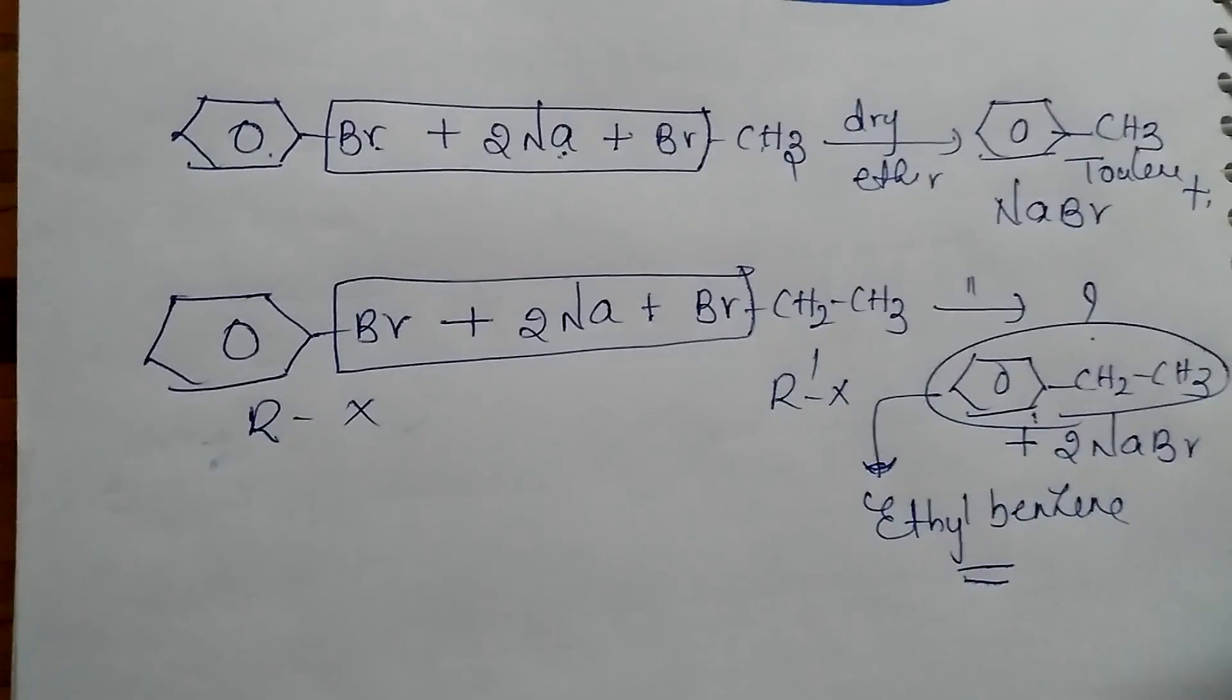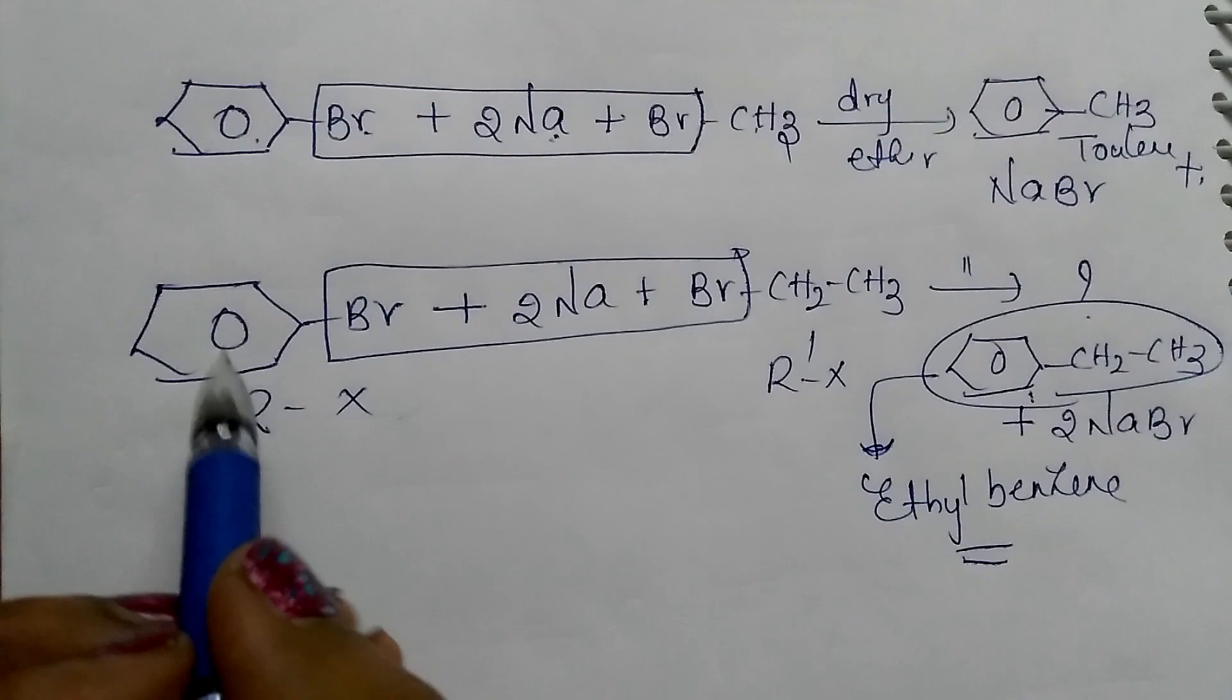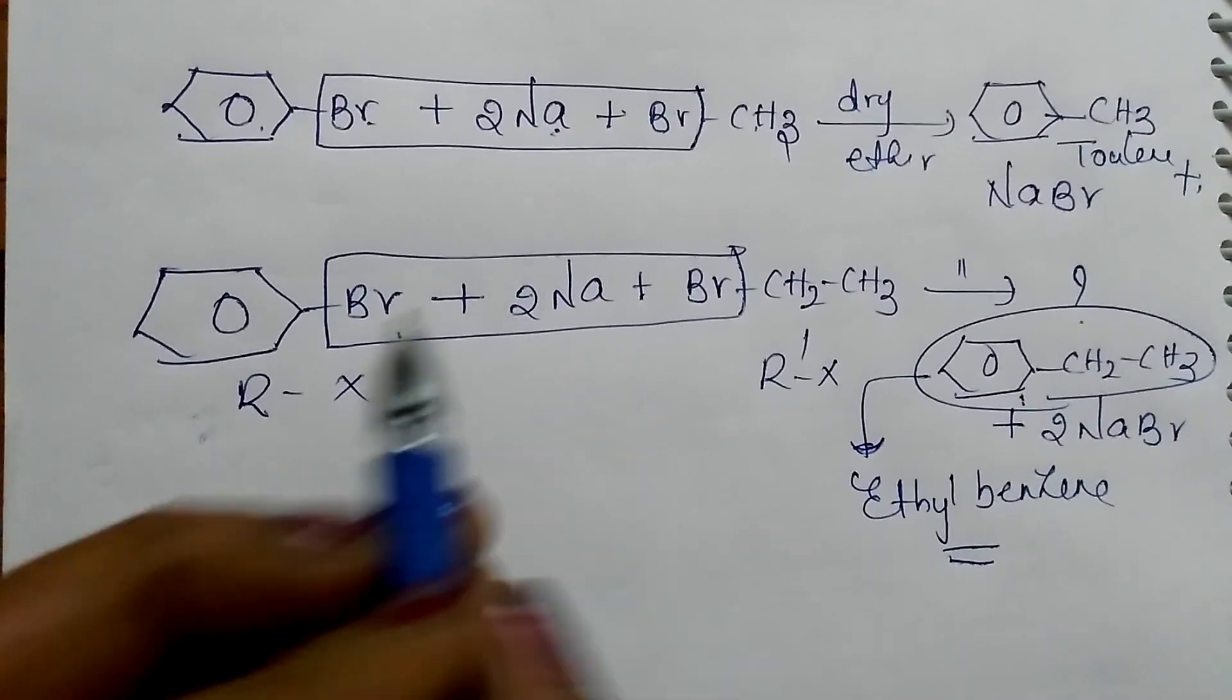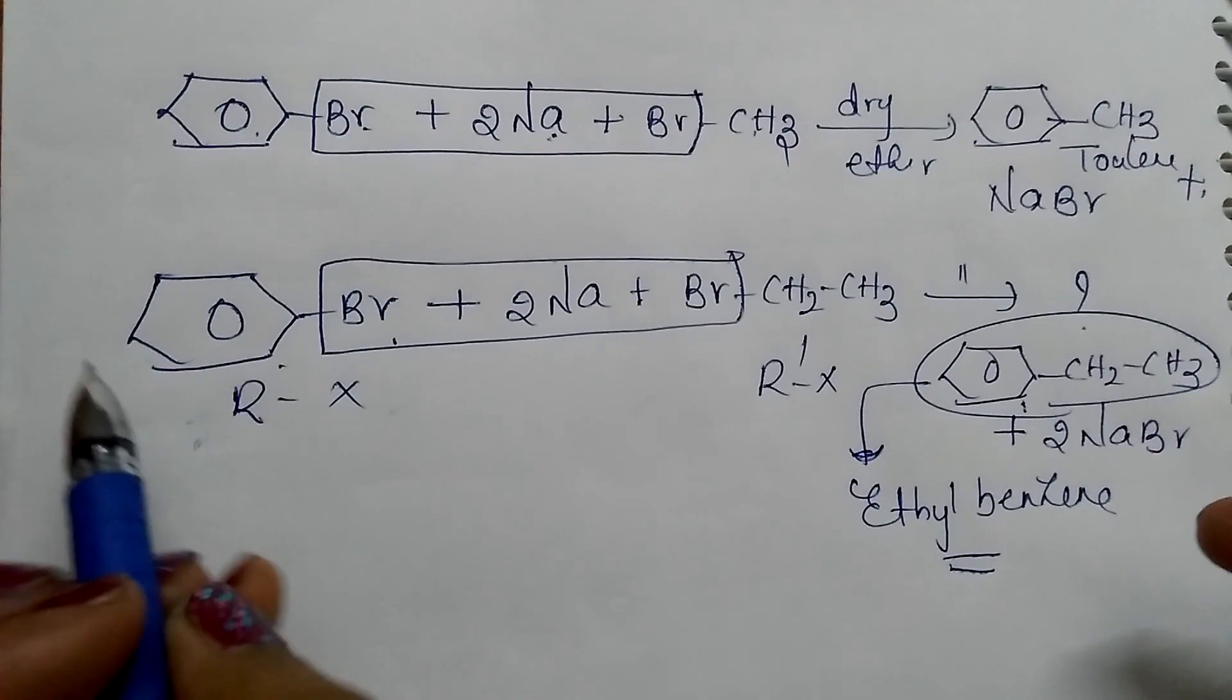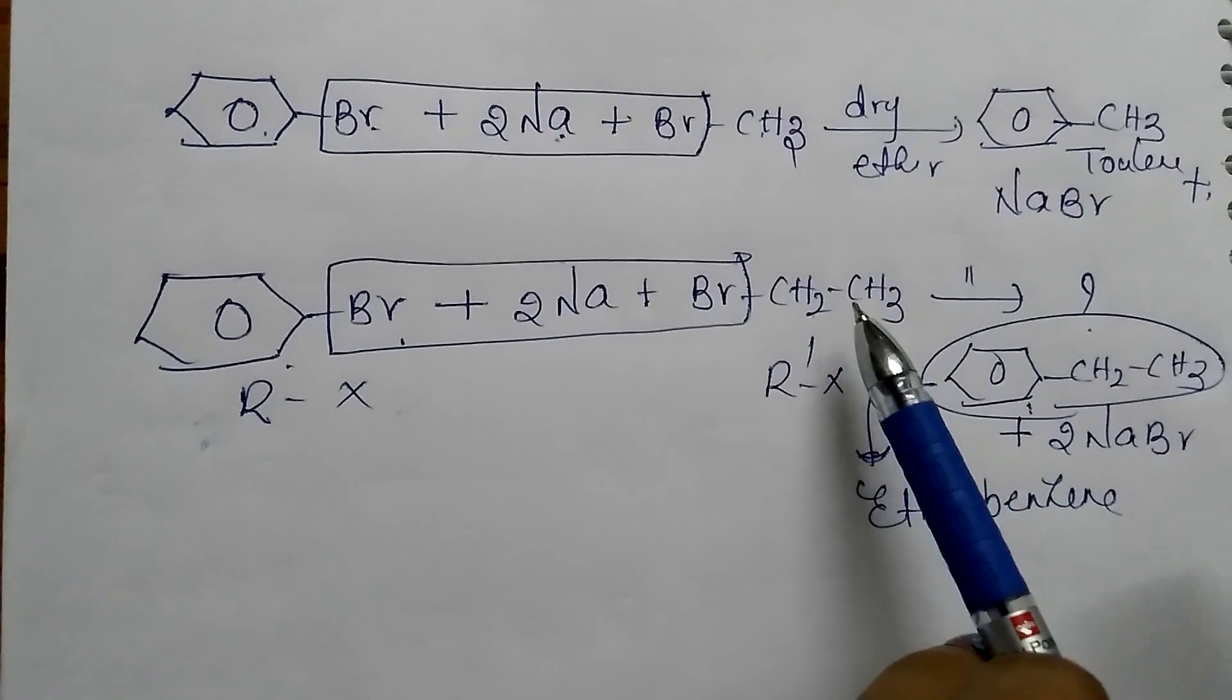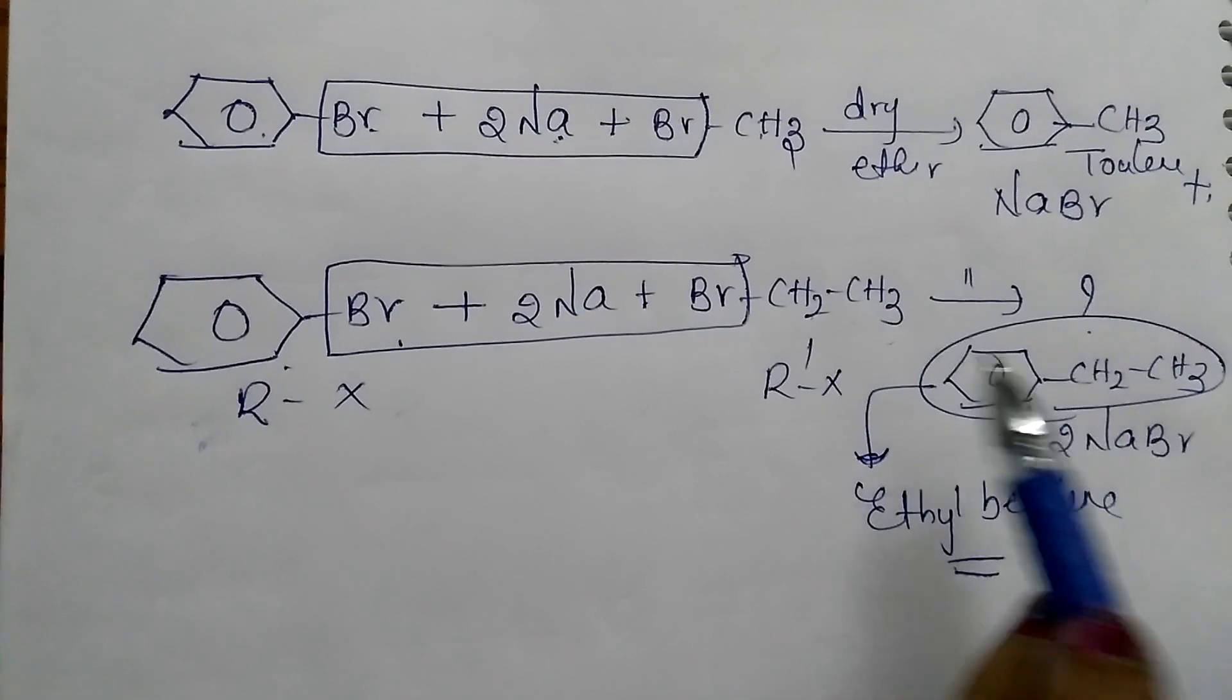So along with this we will be getting byproducts also. If two moles of bromobenzene react with sodium then biphenyl compound is formed, and two molecules of ethyl bromide react with metallic sodium then butane is formed.